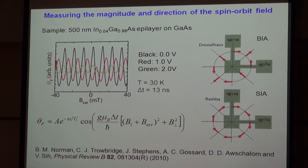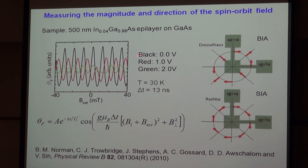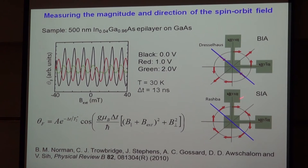In this data, shown for different applied electric fields in different colors, we have both a spin-orbit field parallel to the applied magnetic field, which causes the shift, and also a spin-orbit field perpendicular to the magnetic field, which causes the center peak to look different from all the other peaks. We fit the data to get both of those components. Since we're applying our electric field along a known crystallographic direction, we can separate them: the Rashba field is always perpendicular to the momentum and the Dresselhaus field is parallel to the momentum.